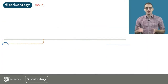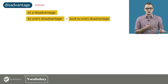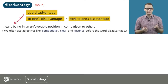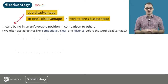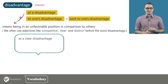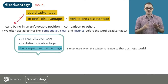The word disadvantage is often used in the following phrases: at a disadvantage, and to one's disadvantage or work to one's disadvantage. The phrase at a disadvantage means being in an unfavorable position in comparison to others. We often use adjectives like competitive, clear, and distinct before the word disadvantage — for example, at a clear disadvantage, at a distinct disadvantage, and at a competitive disadvantage. Notice that competitive is often used when the subject is related to the business world.